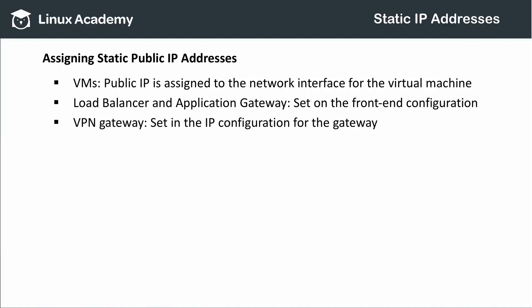Static public IP addresses for virtual machines are configured into the network interface's settings. Load balancers and application gateways are assigned static public IP addresses when configuring their front-end IP address pools. VPN gateway settings include the ability to assign a static public IP address.